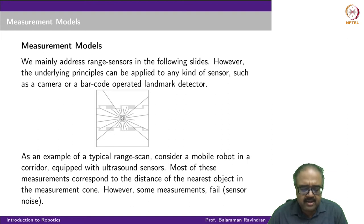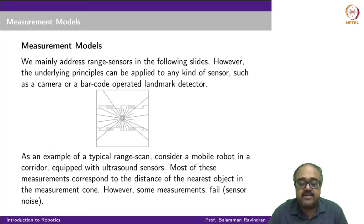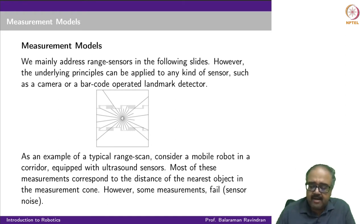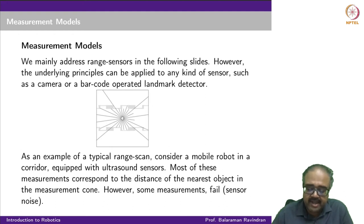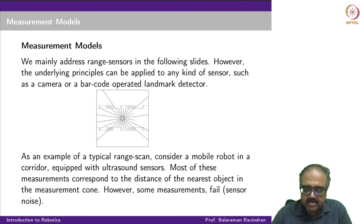Getting back to the main lecture: I am going to look at a typical sensor, for example an ultrasound sensor. There is a mobile robot in a corridor with a range finder having multiple ultrasound detectors running off in different directions. Typically, each of these ultrasound detectors returns the distance to the nearest object in the direction of the scan. Each ray here represents one direction in which the ultrasound sensor is scanning, and in most cases it returns the distance of the nearest obstacle.